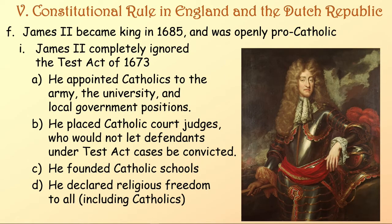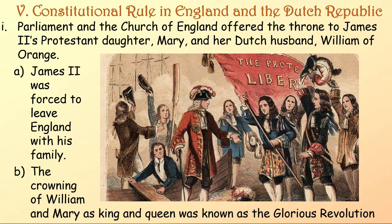James II became king in 1685 and was openly pro-Catholic. He completely ignored the Test Act of 1673, appointing Catholics to the army, university, and local government positions, placing Catholic court judges who would not let Test Act defendants be convicted, founding schools, and declaring religious freedom to all including Catholics. Parliament and the Church of England offered the throne to James II's Protestant daughter Mary and her Dutch husband William of Orange. James II was forced to leave England with his family, and the crowning of William and Mary as king and queen was known as the Glorious Revolution.